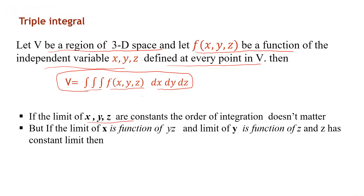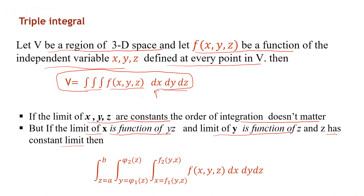Notice that if the limits of x, y, and z are constant, then the order of integration doesn't matter — you can integrate with respect to x then y then z, or y then x then z. However, if the limit of x is a function of y and z, the limit of y is a function of z, and z has constant limits, then you must follow the order: first integrate with respect to x, then y, then z.